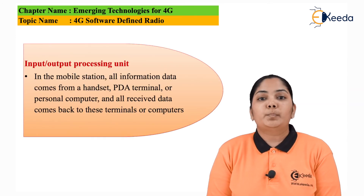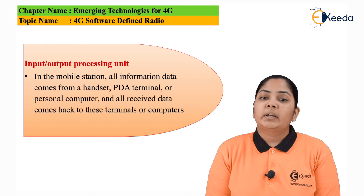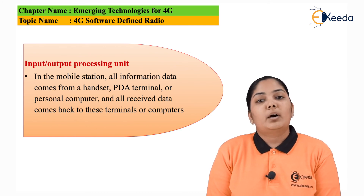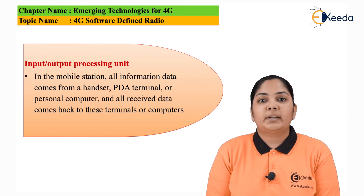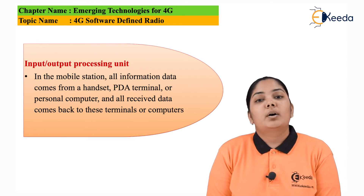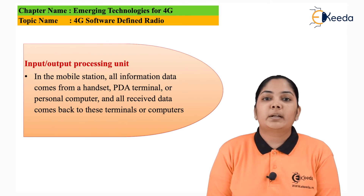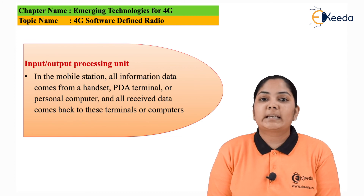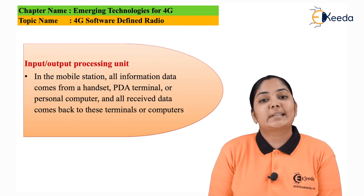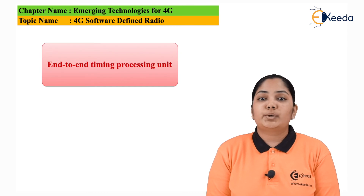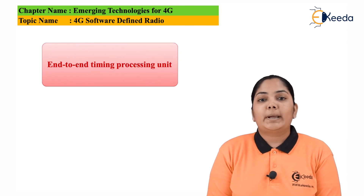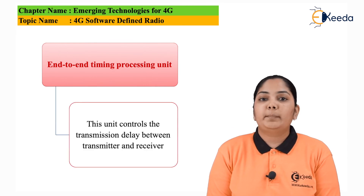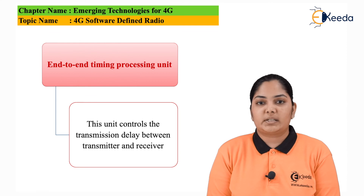The next unit is the input-output processing unit. Since we are using handsets or computers as our devices, all information is transmitted from these handsets and computers, and received information is processed back to them. So the input-output terminal basically controls the input-output of these handsets and devices. The last unit is the end-to-end timing processing unit, which maintains the time duration between the transmission and reception of signals.